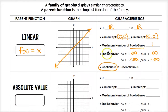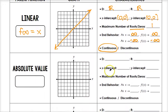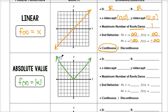Moving on to absolute value, which is what we've been looking at in this unit. The parent function is f(x) = |x|, which graphs a V-shape with a vertex at the origin. The domain is all reals, the range is y ≥ 0, and the x-intercept and y-intercept are both at the origin.